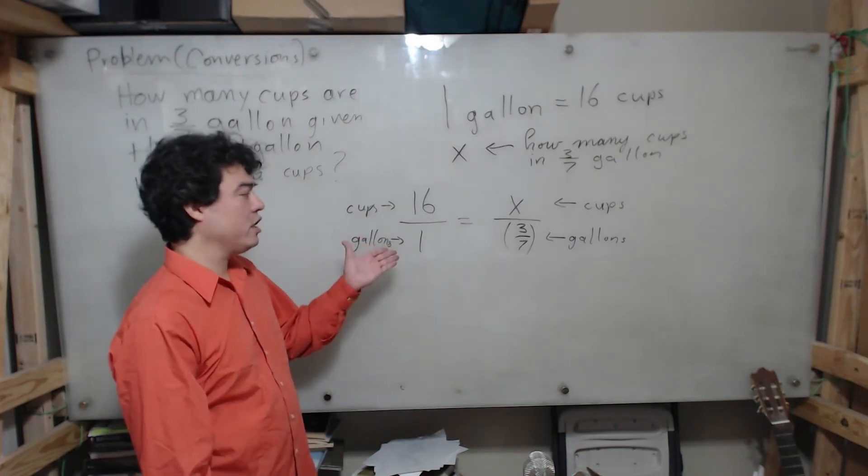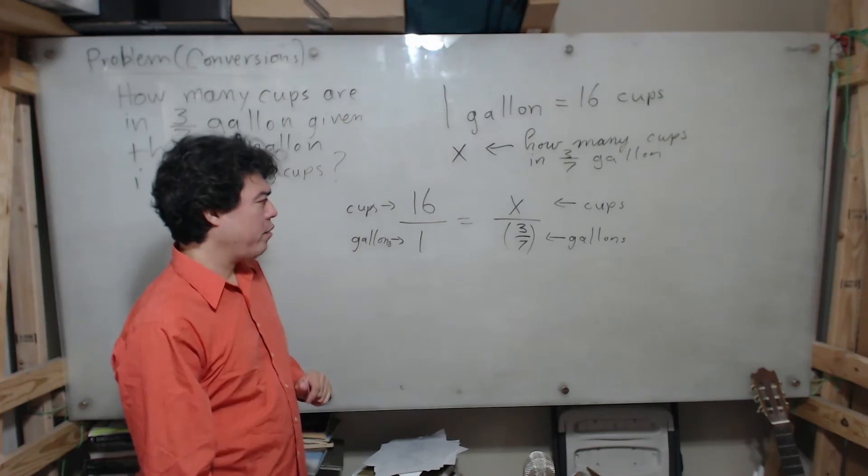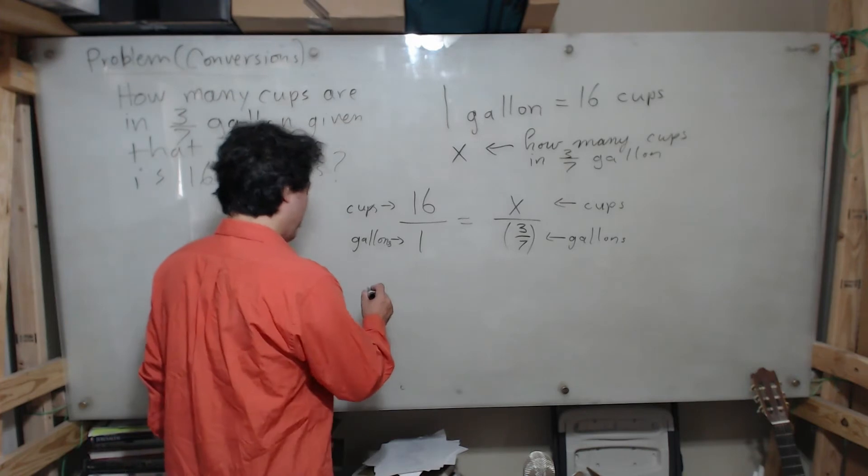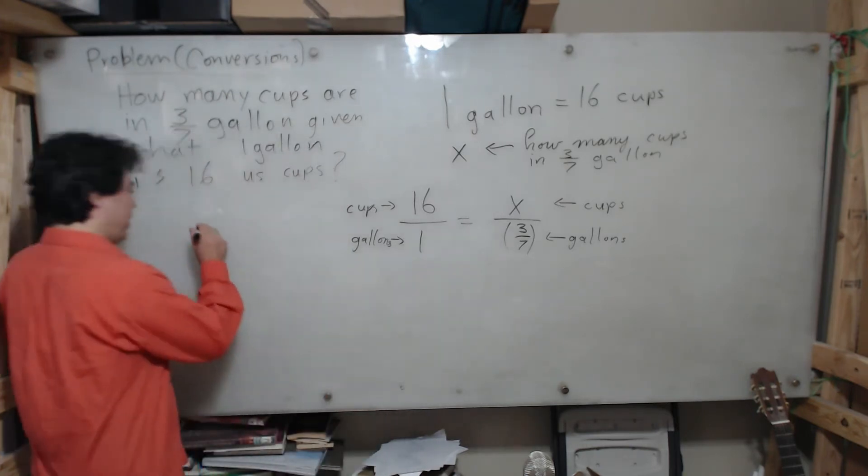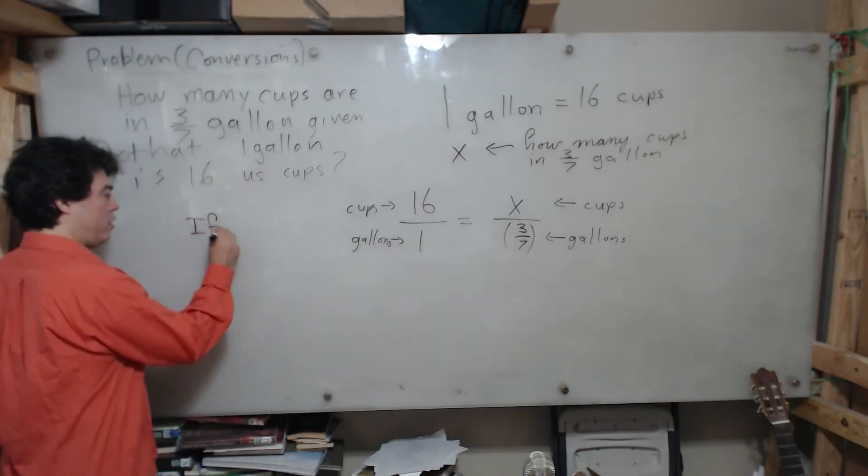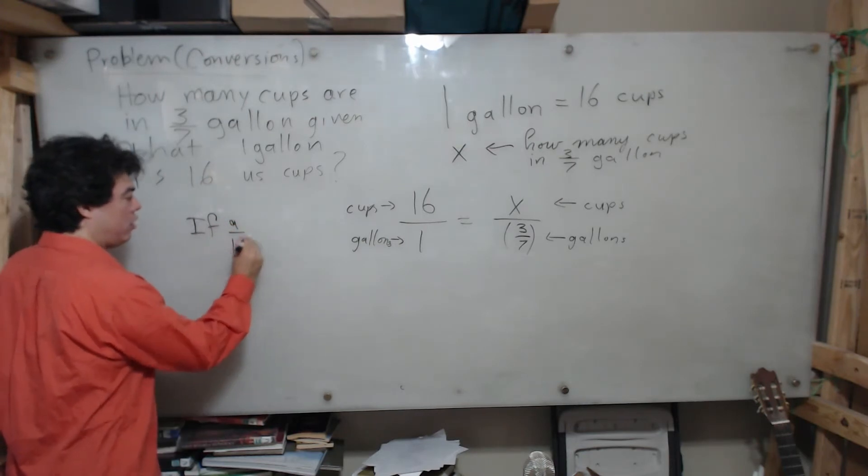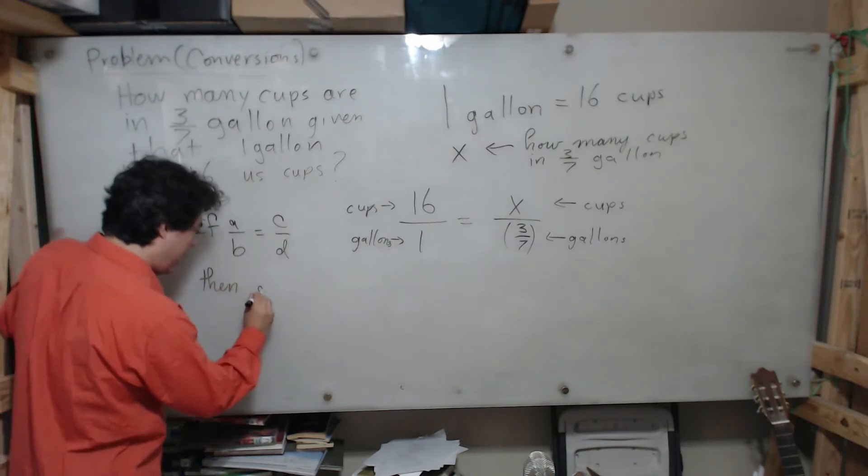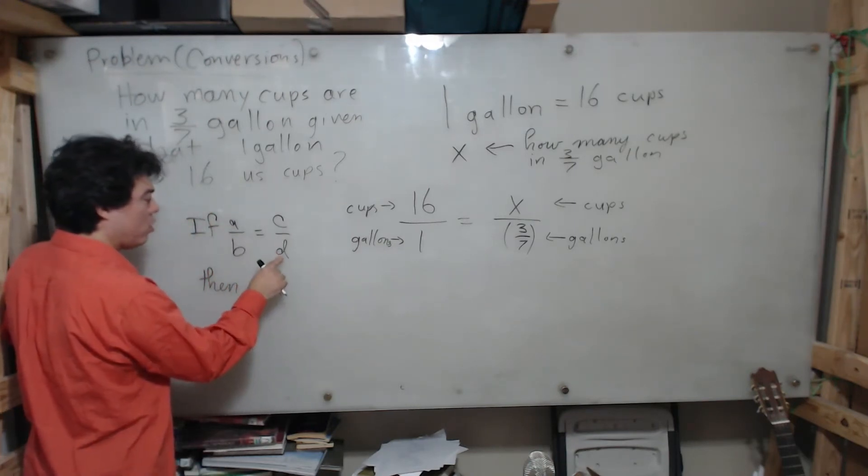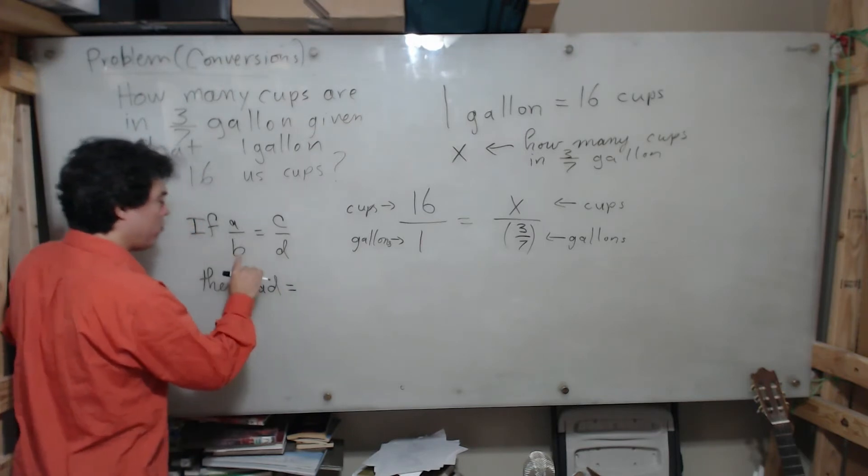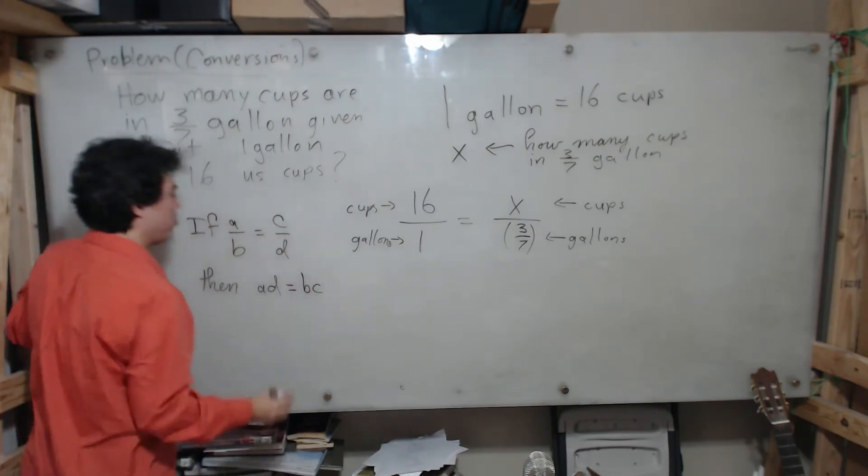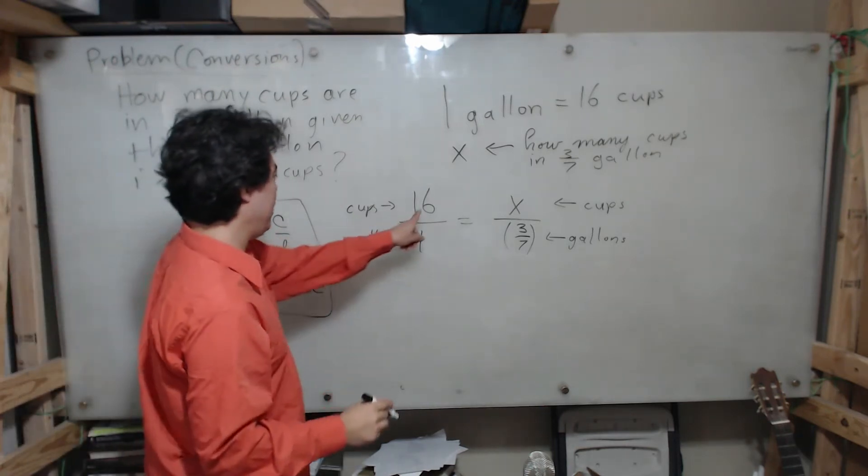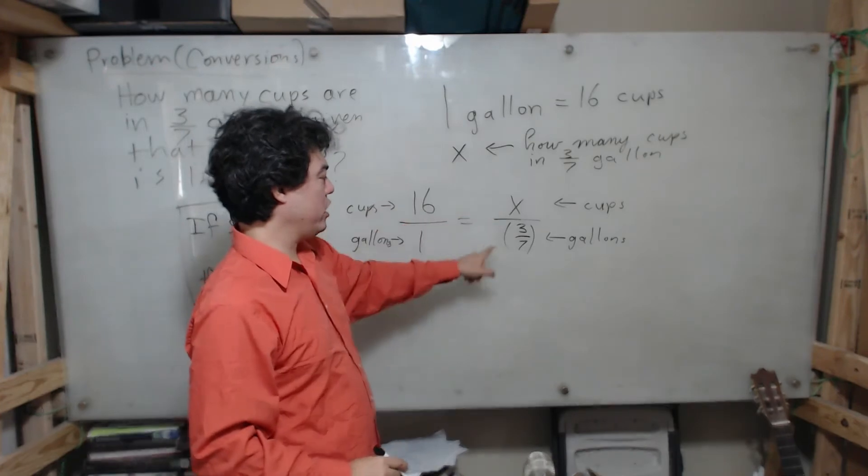So we recall our universal technique for solving proportions, and it goes as follows: if a over b equals c over d, then a times d will equal b times c. We remember this technique.